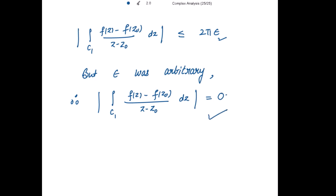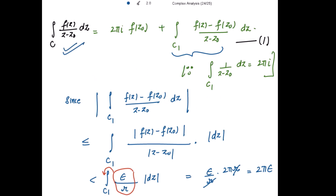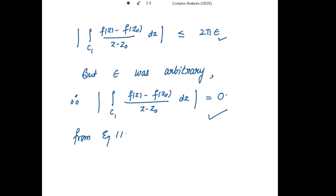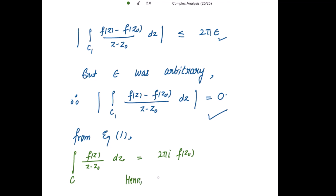Substituting this back into equation 1, the integral of f(z) divided by (z minus z0) dz over contour C equals only the first term, which is 2πi·f(z0), since the second term is 0. Hence f(z0) equals 1 divided by 2πi times the integral over C of f(z) divided by (z minus z0) dz. Hence Cauchy's first integral formula has been proved.